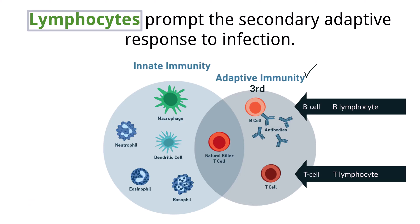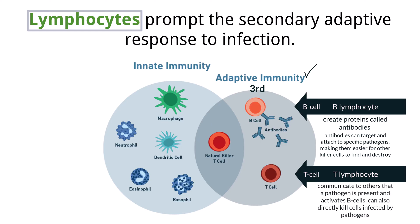We are going to break down how these cells work in great detail on the next few slides, but for a brief overview, we need to know that B cells create specific proteins called antibodies. These antibodies are unique and can help the body identify a specific pathogen to be destroyed. T cells are communicating cells that can activate B cells. They have the ability to recognize that a pathogen is present and then communicate that to the B cells to make the antibodies that target each pathogen to be destroyed. Let's dive into the details of how this works.